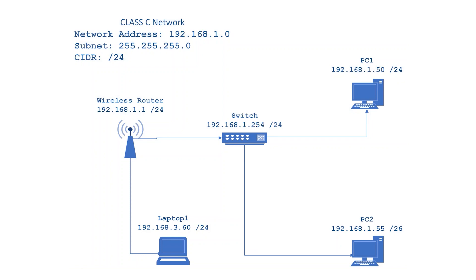However, Laptop 1 will not be able to communicate with the other devices as it belongs to a different network address — the 3 in the third octet shows that. PC2 will not be able to communicate with the switch as they are in different IP subnets. If you want to enable communication between Laptop 1 and the rest of the network, you simply need to change its network address.